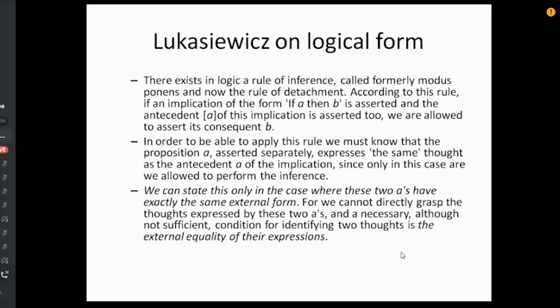He then says, in order to be able to apply this rule, we must know that the proposition a asserted separately, i.e. when you don't assert it as part of if a then b, but if we assert it just as a on its own, we must know that that proposition expresses the same thought as the antecedent a of the implication, since only in this case are we allowed to perform the inference. We can state this only in the case where these two a's have exactly the same external form. Right, so we're not clairvoyants, assume that, we can't read minds, we don't know what the person expressing the argument means by a, so we can only assess the argument for validity by grasping the thoughts as expressed by the two a's. And a necessary, although not a sufficient condition, for identifying the two thoughts is the external equality of their expressions. So fasten upon that last bit, external equality.